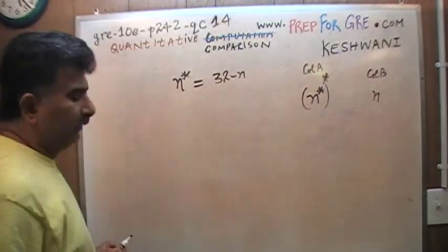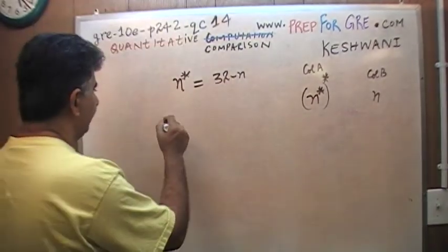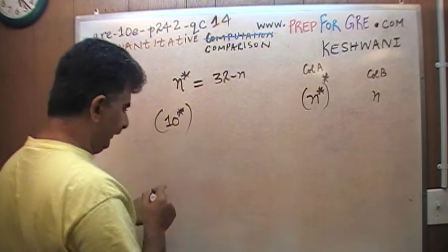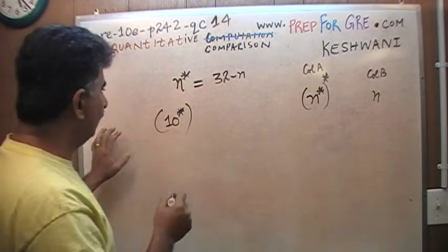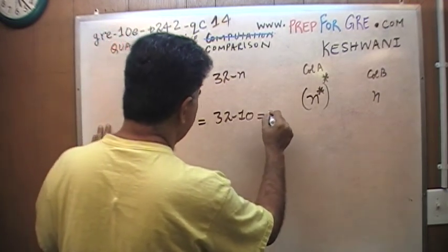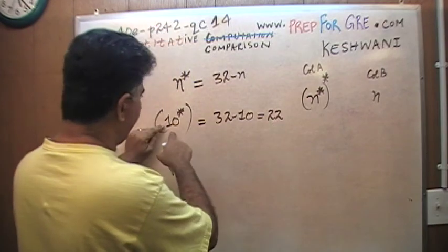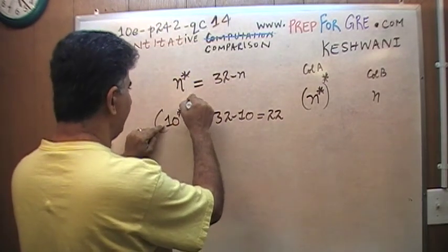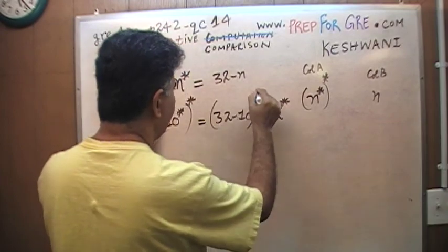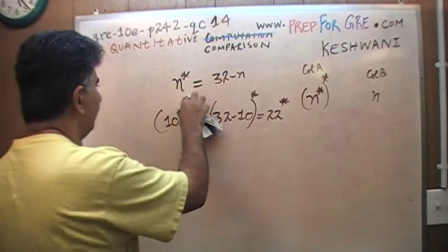There's no big deal here. You just repeat the same procedure twice. For example, 10★, as I did just a little while ago, just equals 32 minus 10, which is 22. So now I have this 22, which is this part right here, and then outside I have another star. I should have put all of this in a different color.